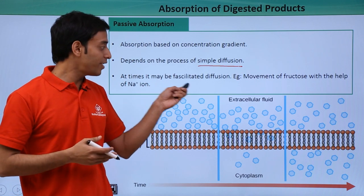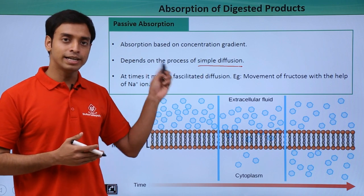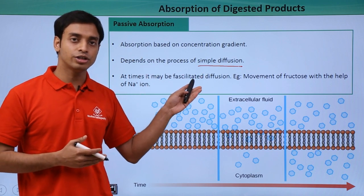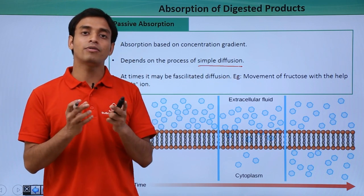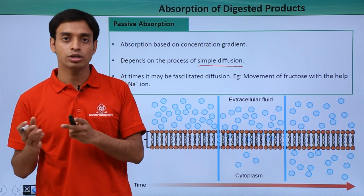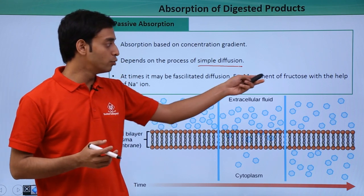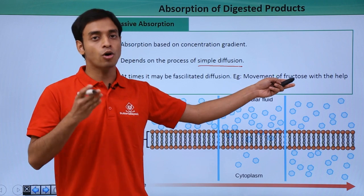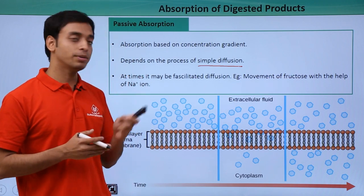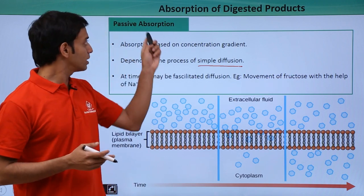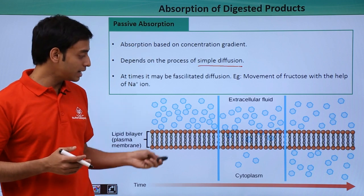At times absorption can happen as facilitated diffusion. This does not require energy, but movement can only happen with the help of other molecules — the molecules cannot move alone. For example, the movement of fructose can happen only with the movement of sodium ions.